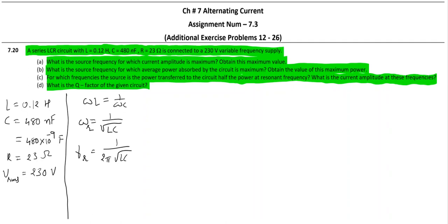We are also supposed to find out maximum value of current. So I_rms max equals V_rms divided by R. Why R? Because at resonance, actually for series LCR circuit, mod Z is